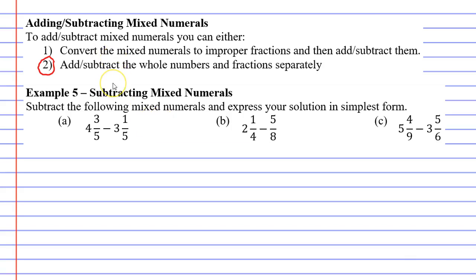Alright, so starting off with the fractions 3 over 5 and 1 over 5. If we subtract them the denominator is going to stay the same. It's going to stay as 5 and 3 minus 1 gives us a numerator of 2, and once we've done that we then focus on our whole numbers. What is 4 minus 3? It's 1. That gives our final solution of 1 and 2 fifths.